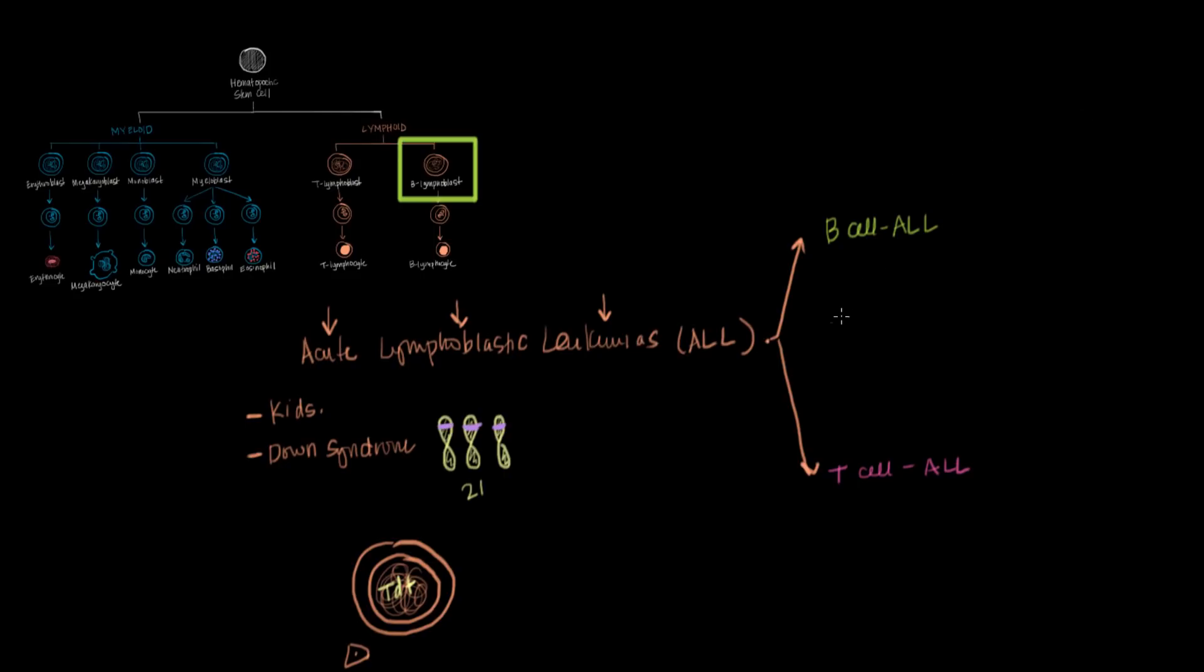And that is that B-cell ALLs are associated with translocations, chromosome translocations. So we know that there are lots of different leukemias that have translocations associated with them, but a B-cell ALL has two very specific translocations associated with it. The first is a t(12;21) translocation. And all that means is that chromosome 12 and chromosome 21 each have a segment that's shifted onto the other chromosome.